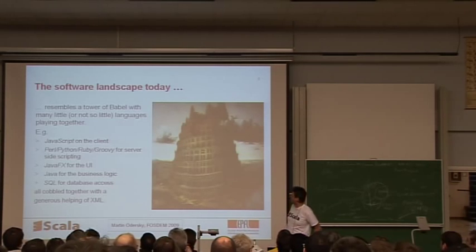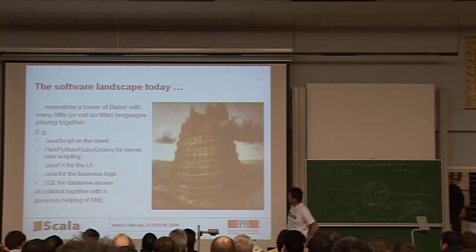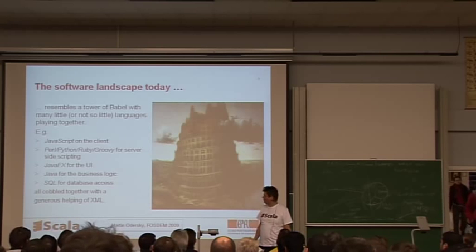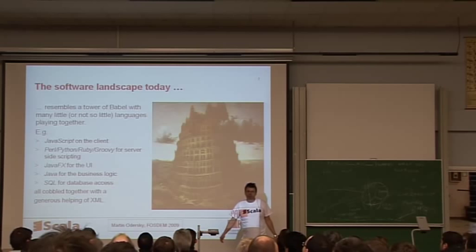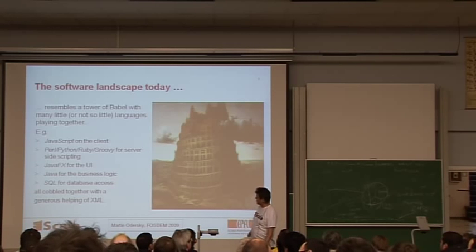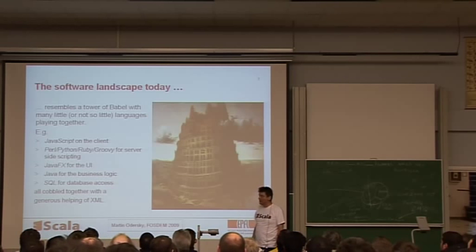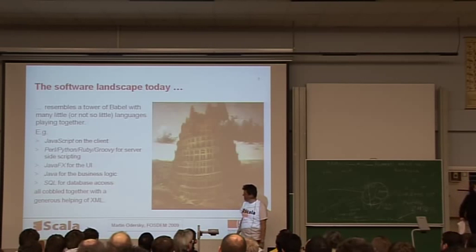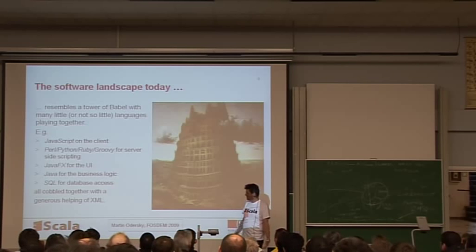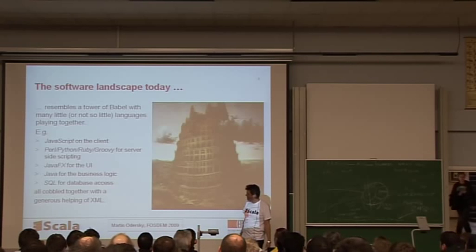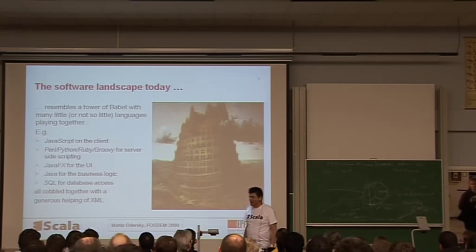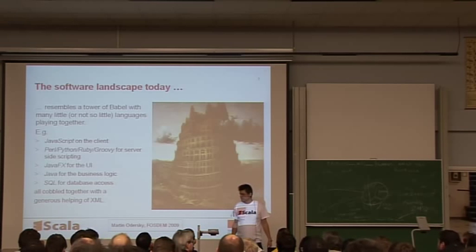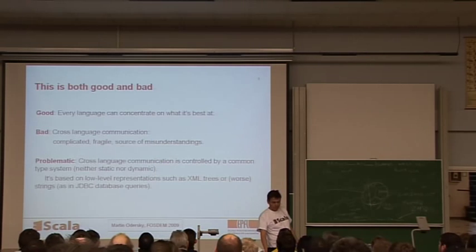So if you look at the software landscape today, then I think it resembles more and more a tower of Babel with many little or sometimes not so little languages playing together more or less well. A typical setup would be that you have JavaScript in the browser on the client, and you would have some language for server-side scripting - Perl, Python, Ruby, Groovy, whatever. If you're in a Java environment, maybe you have JavaFX for the UI, you would have maybe Java for the business logic or something else, C-sharp, C++, SQL for database access, and then you need to cobble all this together with usually a generous helping of XML configuration files and so on. So that's the situation today, and it's both good and bad.